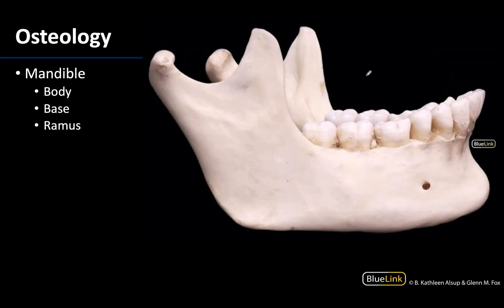Looking at a lateral view you can see a much better view of the ramus of the mandible — you can see how vertical it is in comparison to the more horizontal body, and you can see these two superior projections of the ramus. We will come back to those in the future, but they're important in terms of muscle attachment as well as joint formation. This is going to be the mandibular part of your TMJ joint.